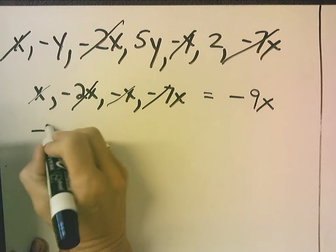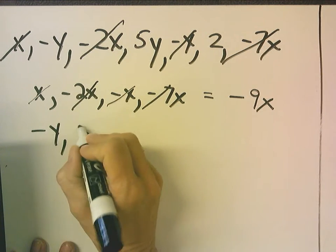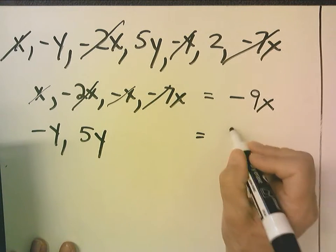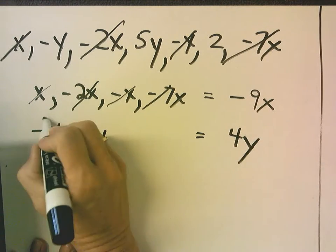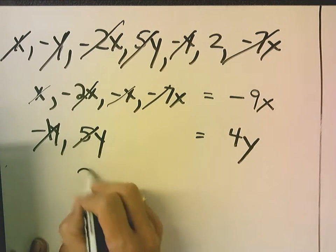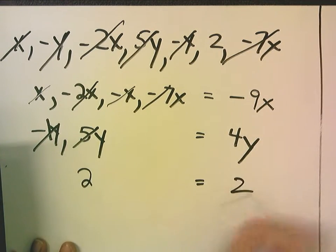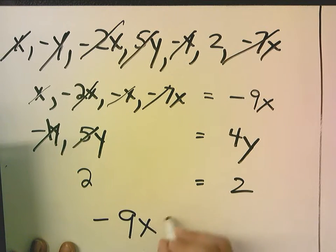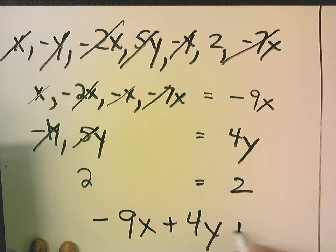Then I have negative y and 5y. That becomes positive 4y, because this is negative 1. 5 minus 1 is 4. And then I'm left with just a 2. So I have negative 9x plus 4y plus 2.